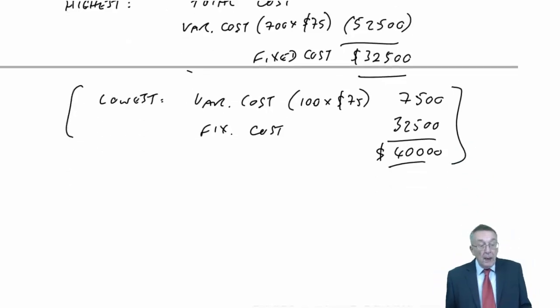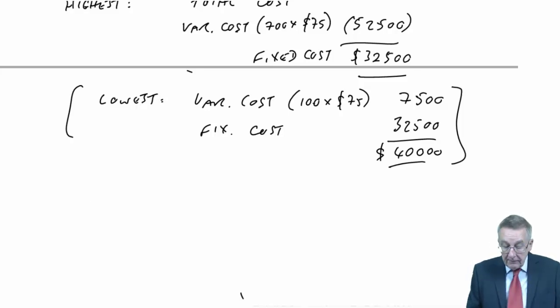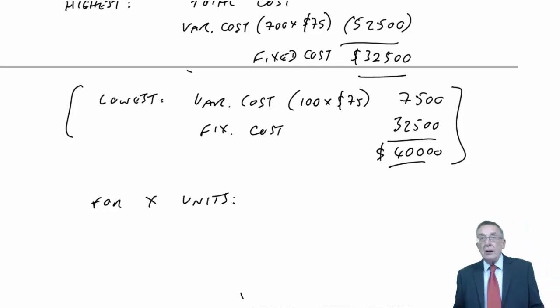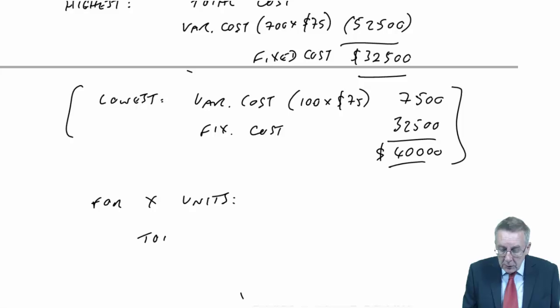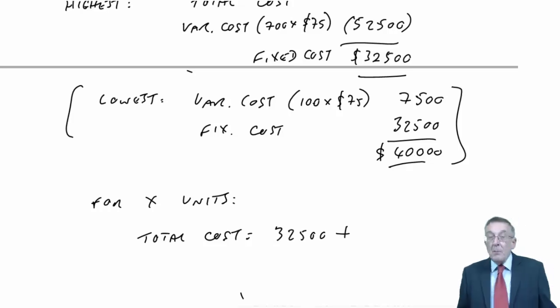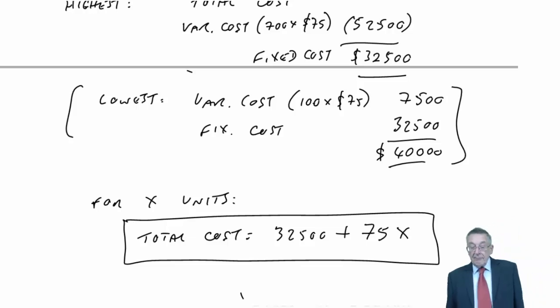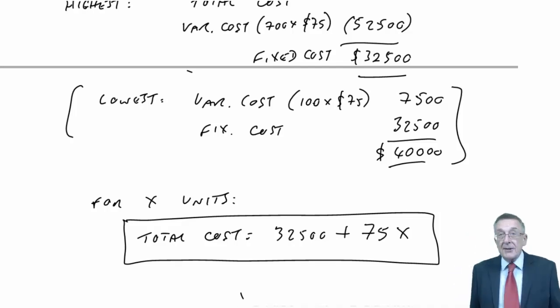But there we are. And we could now use that for forecasting. Because we can say that however many units we produce, so for X units, if I'm trying to forecast for next month, next month I think we'll produce 800 units or something. Well, can we not say that the total cost, there's always going to be the fixed cost of $32,500. But in addition, a variable cost of $75 for every unit, and therefore with X units, a total of 75X. So that's why we're dealing with forecasting. We've looked at past months to determine what the fixed and the variable costs are.